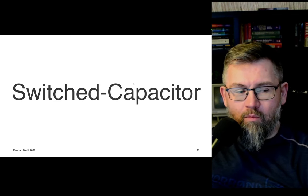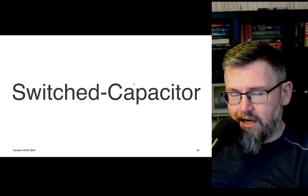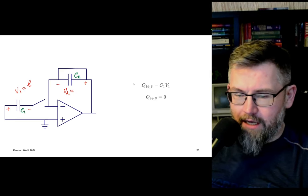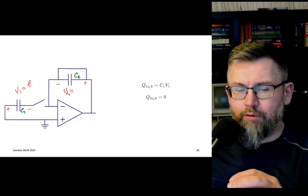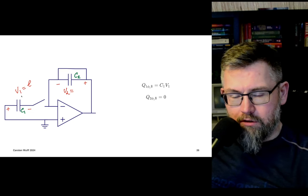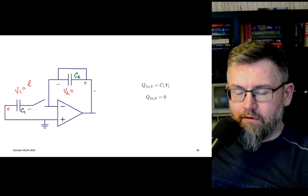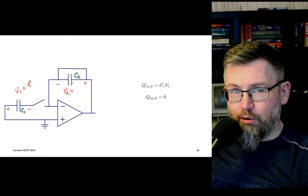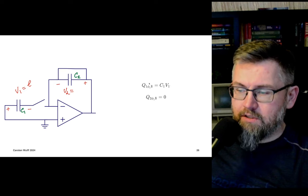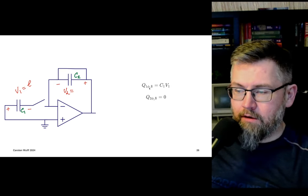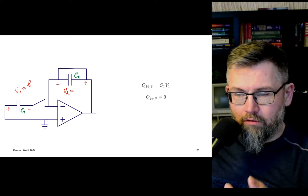That was discrete time. The main topic for today is switch capacitor, and to understand it we need some concepts of discrete time. Looking at the SC circuit again — now with an op-amp introduced — imagine the scenario where we've stored a voltage V1 on capacitor C1, not yet connected to the op-amp, and C2 is zeroed so there is no charge across it. The charge on C1 at the end of PHI1 is V1 times C1, and the charge on C2 is zero.